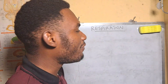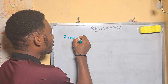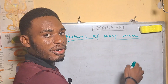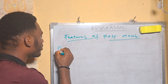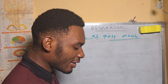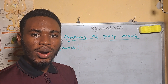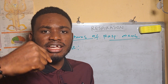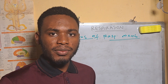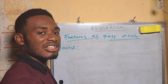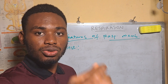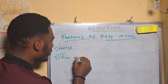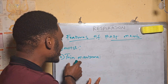The number one feature of respiratory membranes is that they must be moist. Moist means they have to be kind of wet. This moist environment helps the oxygen that we take in to dissolve in them for easy diffusion. So the respiratory membranes must be moist for this oxygen to come inside. Number two, they must have a thin membrane.